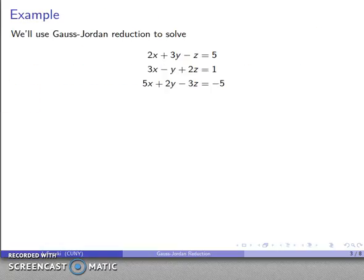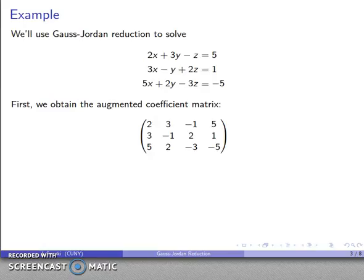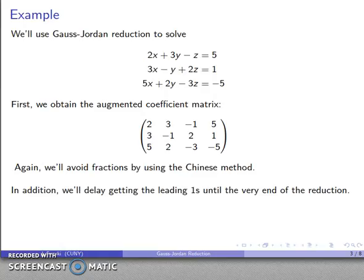We can use Gauss-Jordan reduction to solve our system of linear equations. First, we'll write down our augmented coefficient matrix. As we did before, we'll avoid fractions by using the Chinese method. But we'll do one more thing to delay getting fractions — we'll delay getting leading ones until the very end of our reduction, and we'll see why that's actually useful to do.